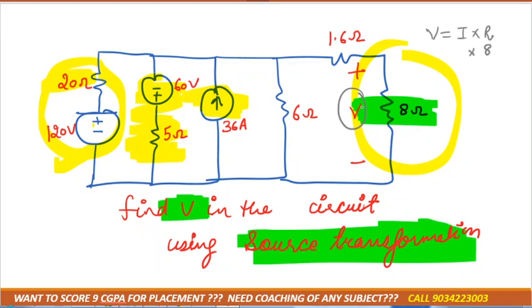R is 8 ohm, voltage that we need to calculate, and I is the current across 8 ohm. So current in the 8 ohm you have to do it by using source transformation only. Got it? This is your homework question. If you have any doubt you can ask.